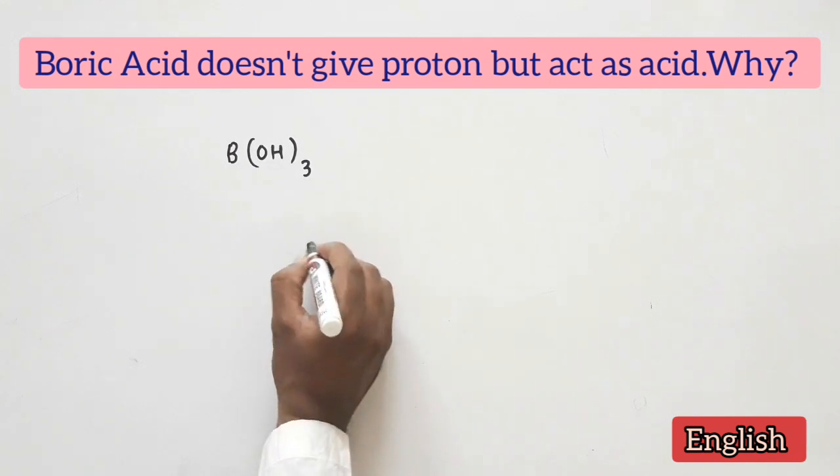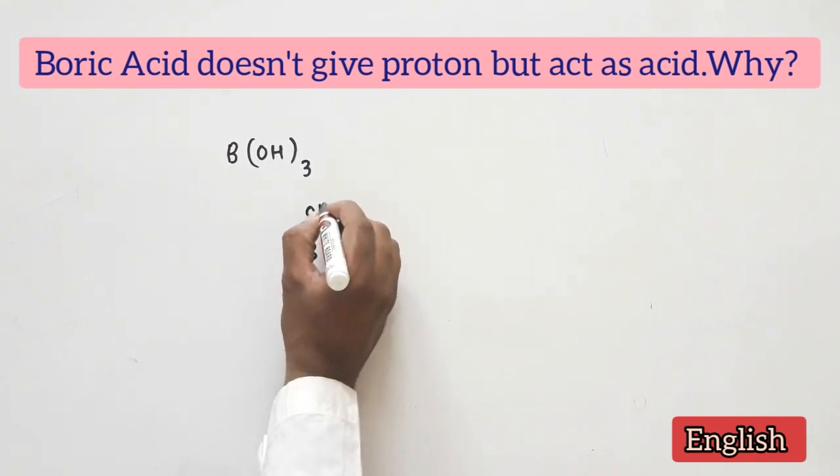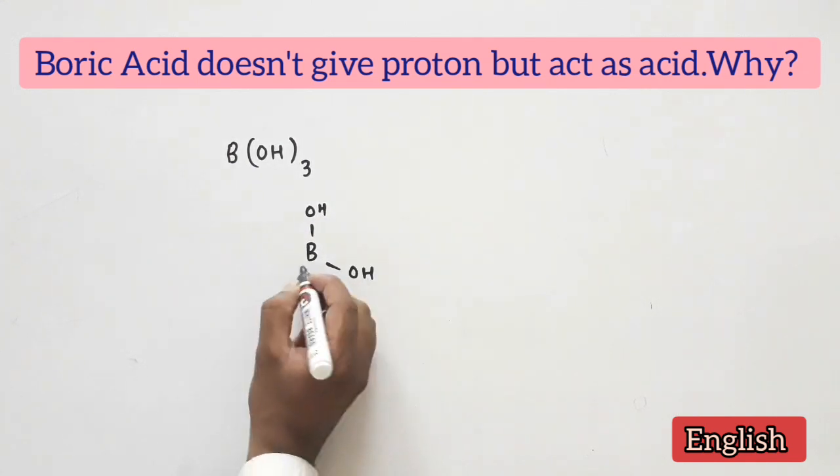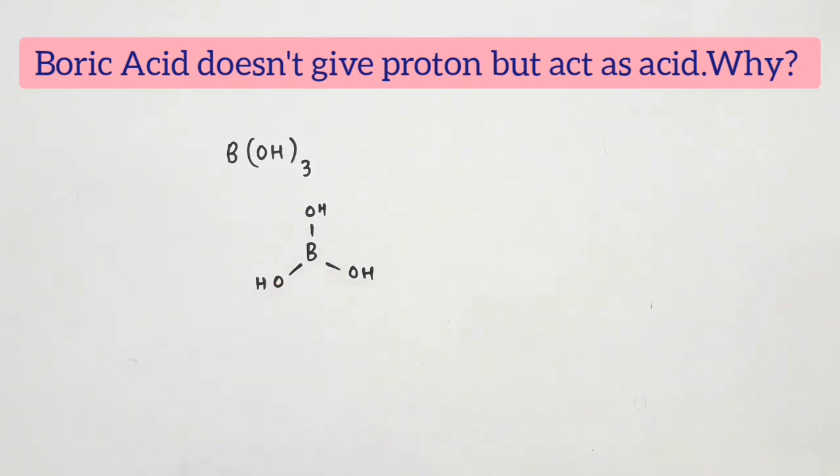Boron is electron deficient because it has 6 electrons and it wants to attain a complete octet. So it has a tendency to accept OH⁻ ion.